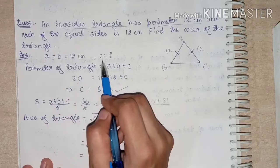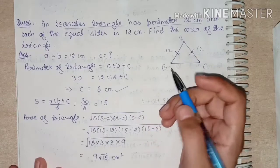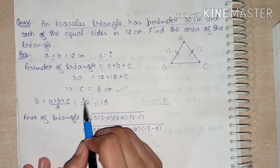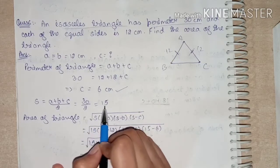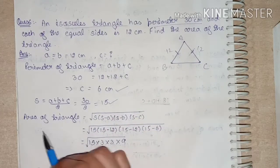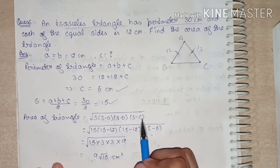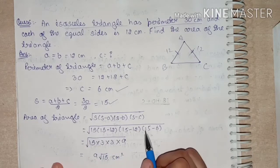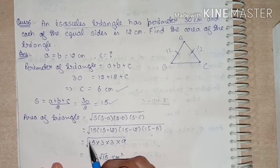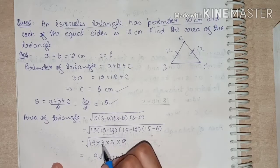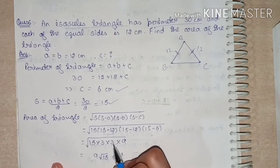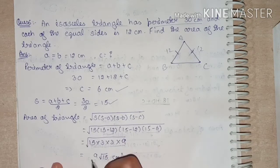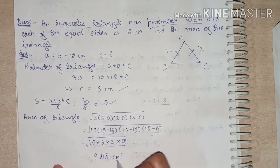Now for s: s = (a + b + c) / 2 = 30 / 2 = 15 cm. Applying Heron's Formula: Area = √(s·(s−a)·(s−b)·(s−c)) = √(15 × (15−12) × (15−12) × (15−6)) = √(15 × 3 × 3 × 9). Solving this gives Area = 9√15 cm².